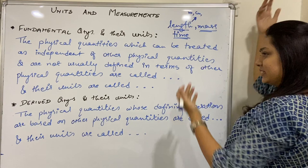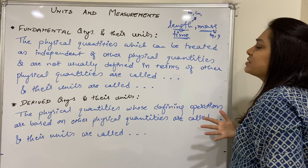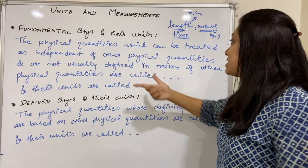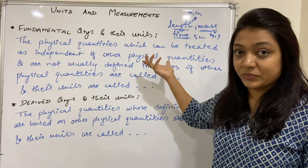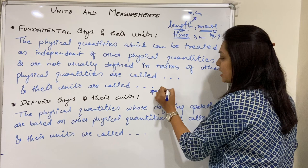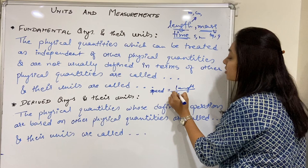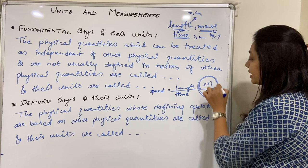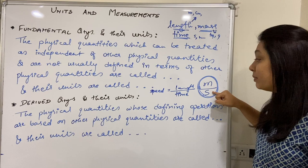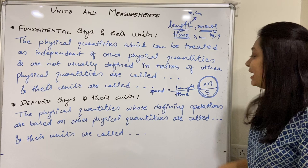Mass measure ho sakta hai kg mein, grams mein — so mass can be measured in different units. Time can be measured in seconds, minutes, years — so these are examples of units of time. On the other hand, derived quantities mein speed — speed we can derive as length upon time. Length matlab jo measure hota hai meter mein, time matlab jo measure hota hai seconds mein. So do fundamental quantities ko mila ke ek teesra quantity derived hua — this is known as a derived quantity and its unit is meter per second, which is its derived unit.